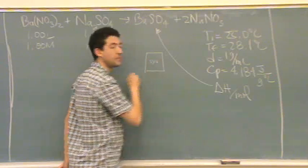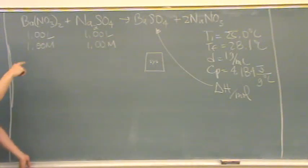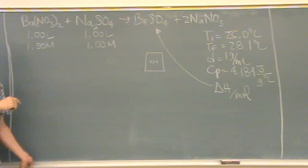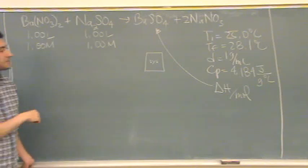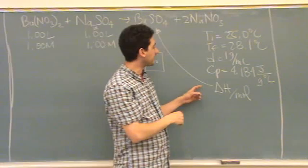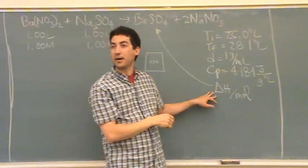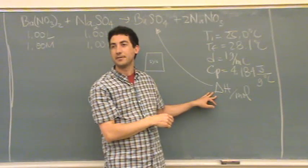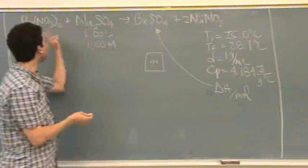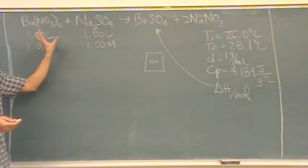You have this system. In this system, this reaction is occurring. When this reaction occurs, it happens to be that heat's given off, some amount of energy. We don't know how much, that's what we want to know. So the reaction gives off energy when it happens.